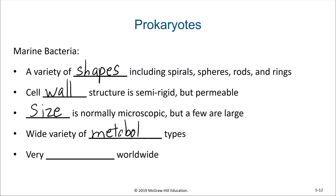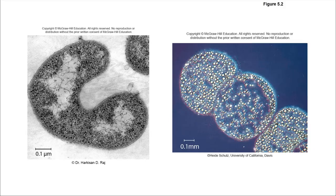Bacteria are very abundant worldwide. Here in these images, we can see one of those ring-shaped bacteria that are found in the marine environment, and in the other slide we can also see one of these extremely large bacterial cells. The little yellow granules within those cells are sulfur.